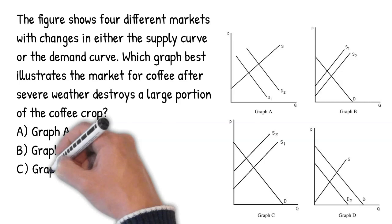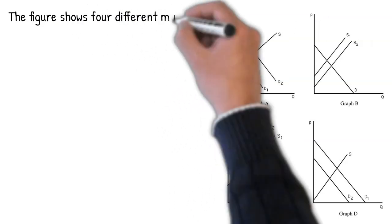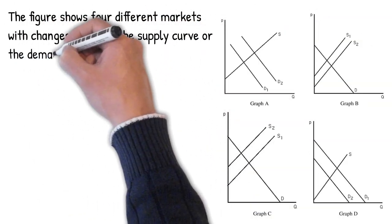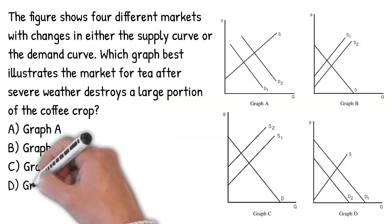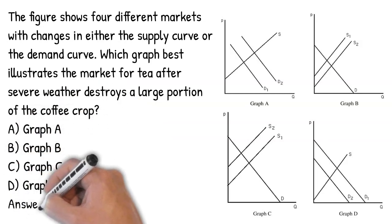Because of the bad weather, the supply curve of coffee shifts to the left. Because of the severe weather, the supply of coffee shifts to the left, resulting in a higher price of coffee. The quantity demanded for coffee will decrease. Because coffee and tea are substitutes, the demand for tea will increase, which means the demand curve for tea will shift to the right.